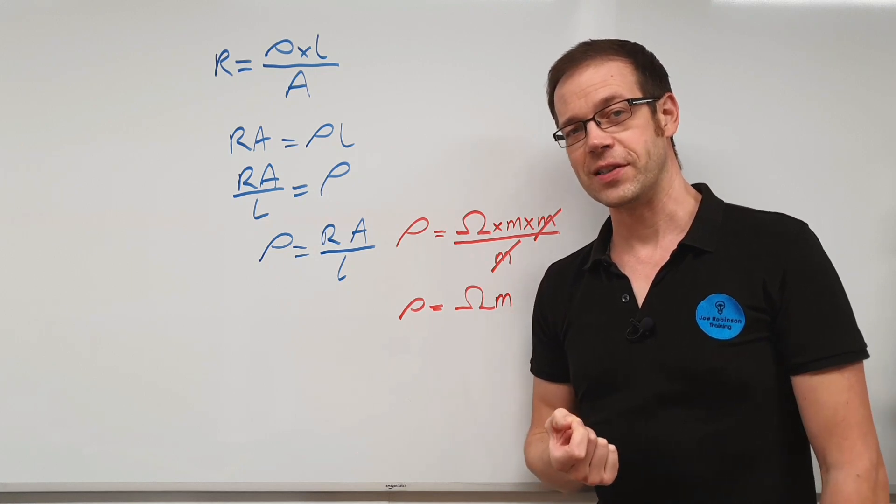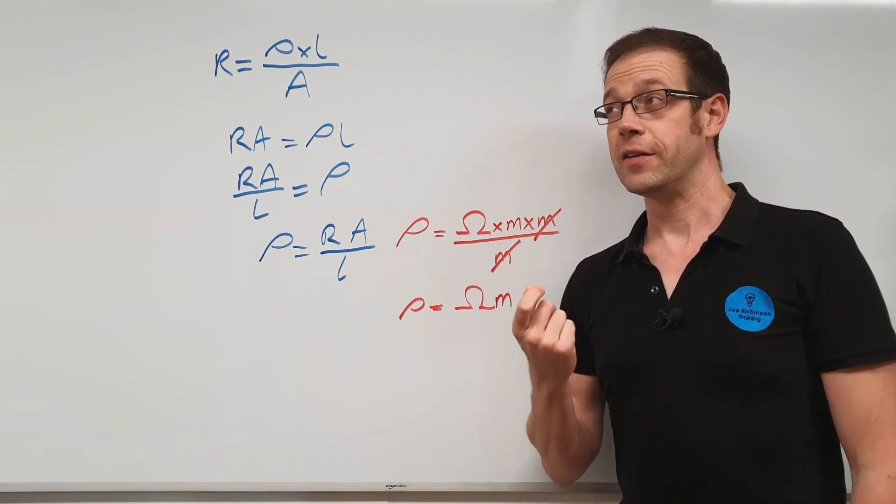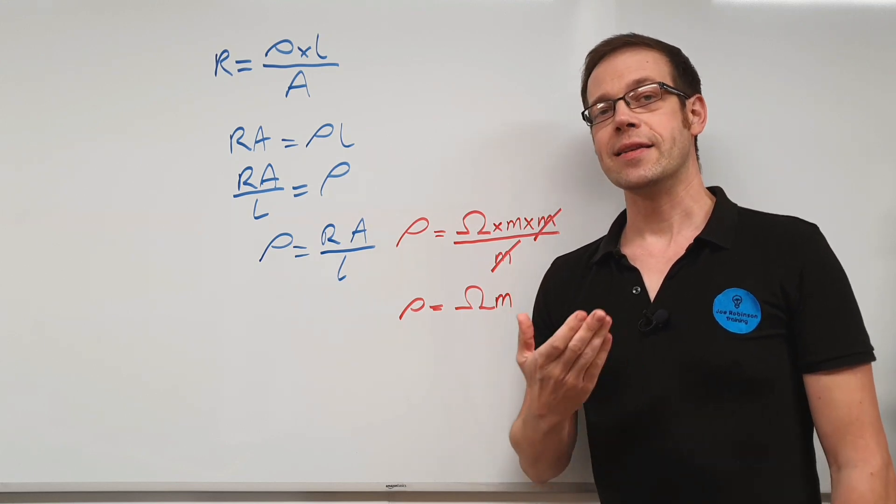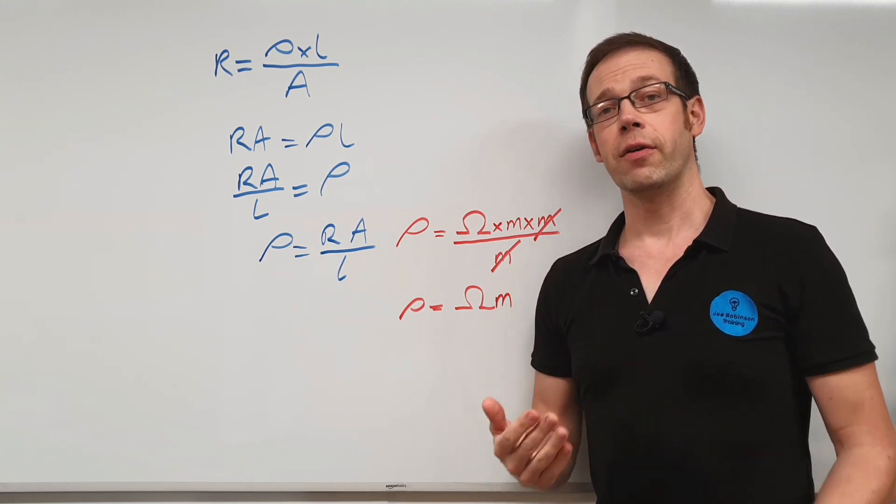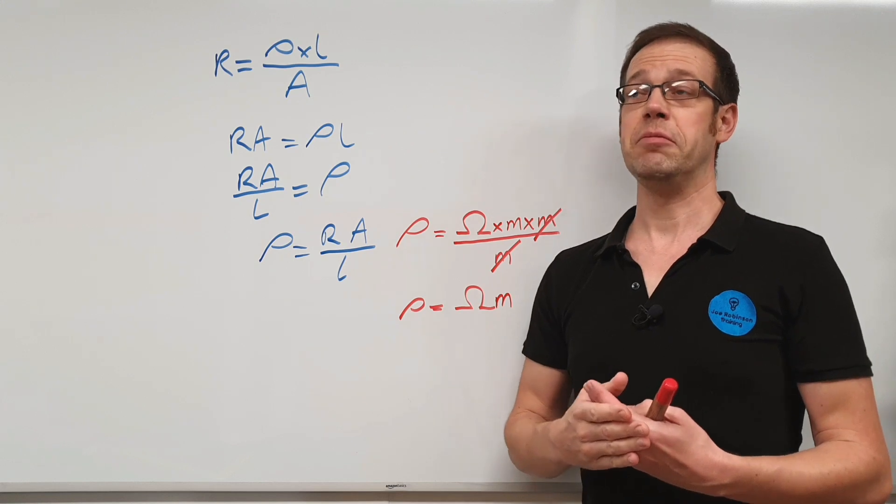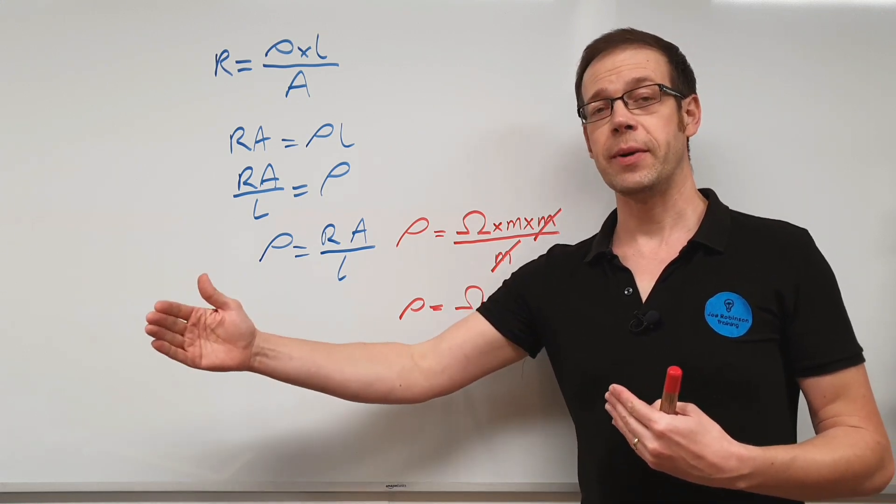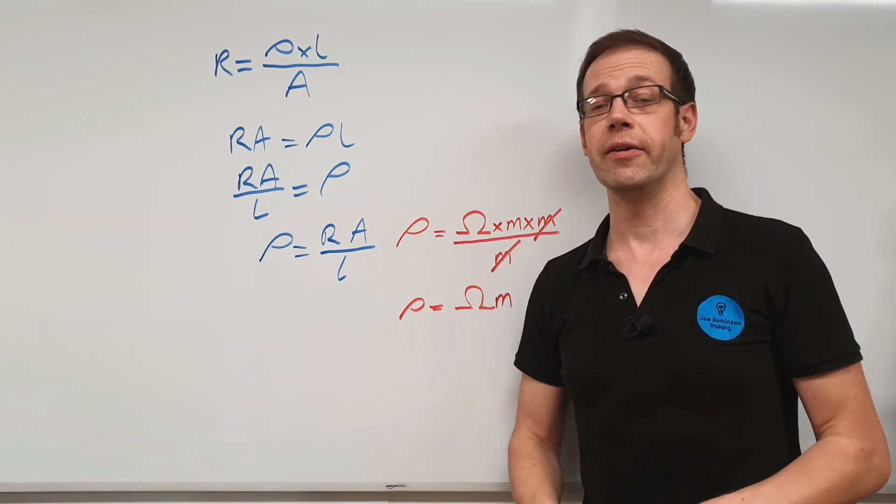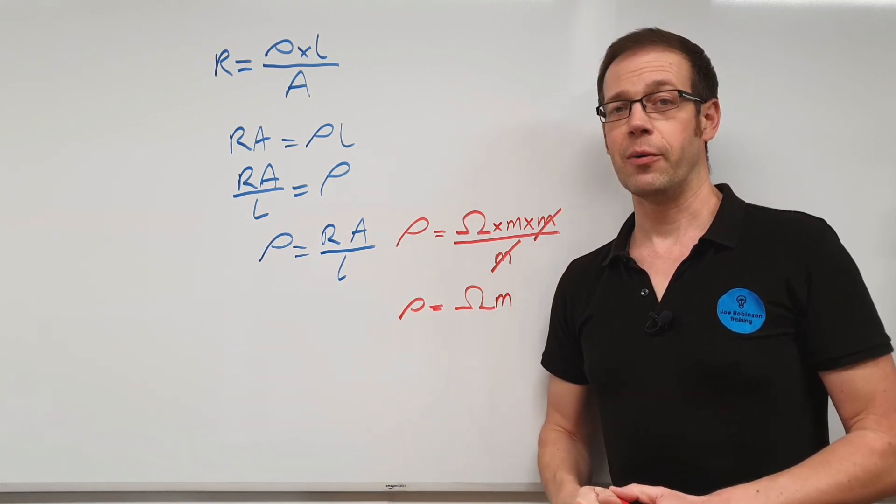Now this is incredibly useful for us as electricians, because once we know the specific resistance of a material like, say, copper, we can then take that value and use it to figure out what any piece of conductor made out of copper, what its resistance will be. As long as we know its length and its cross-sectional area and its resistivity, we can figure out what its resistance will be.